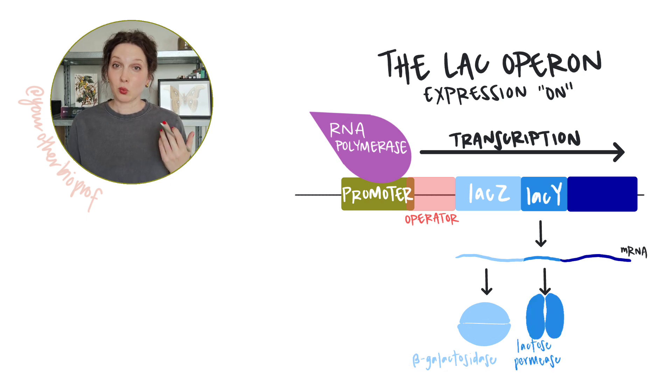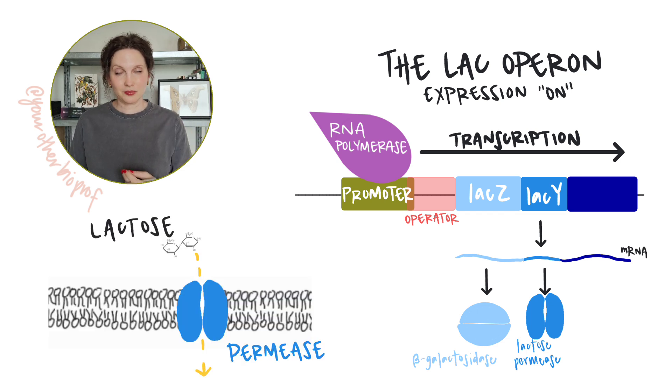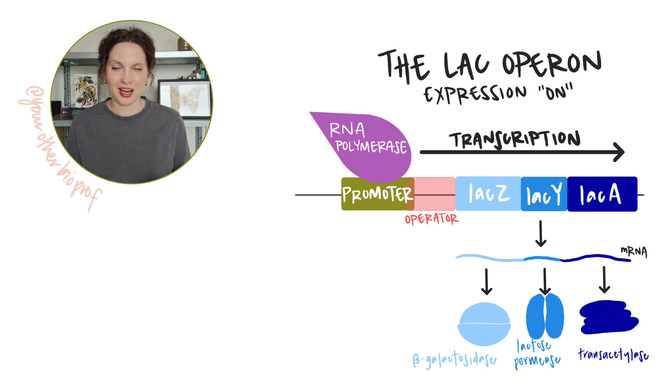Next is lac Y, which encodes a permease. This is going to allow lactose to enter the cell. And finally, lac A. We're not totally sure how the enzyme encoded by lac A is involved in lactose metabolism. It may have a detoxification function. So honestly, some classes just skip it. But what we do know is that the cell doesn't just keep pumping out these enzymes all of the time.